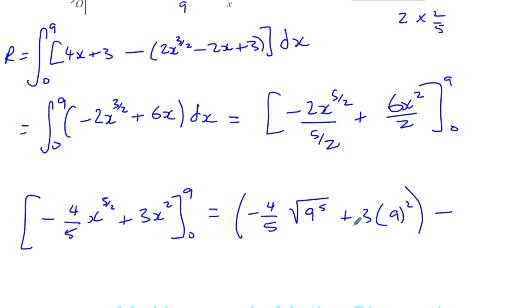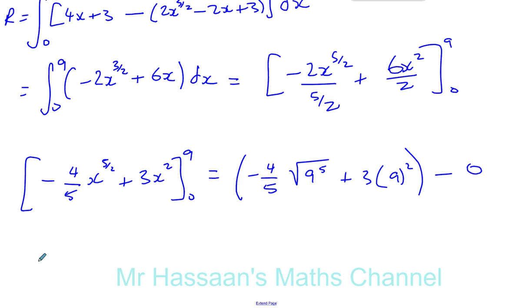You're going to... Well, when you put 0 into here it's going to become 0. Okay, so your area will therefore be given by... Now, the square root of 9 is 3 and 3 to the power of 5 is 81 times 3. Let's just work that out.